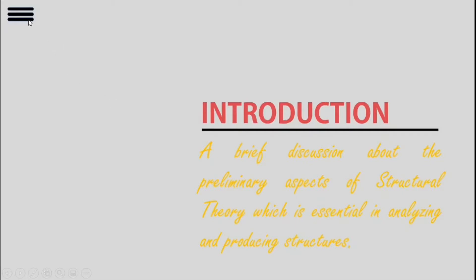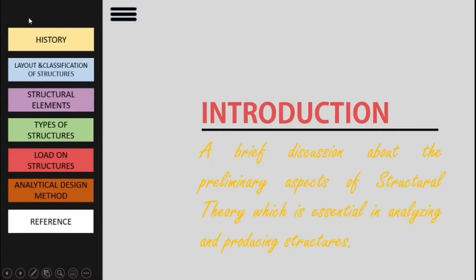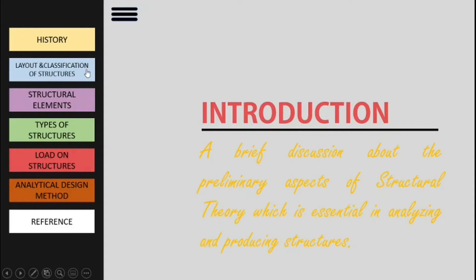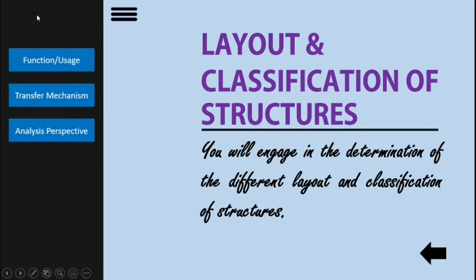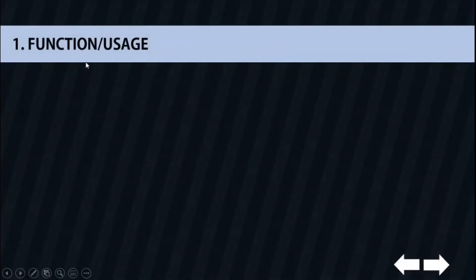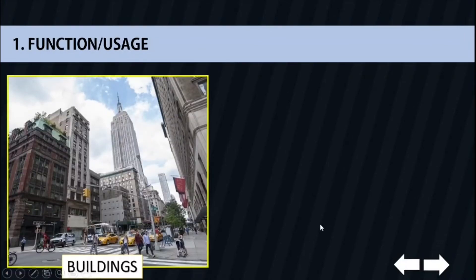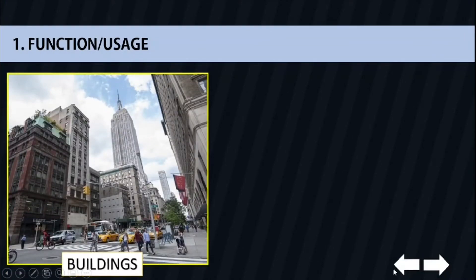Moving to our next topic, you will engage in the determination of the different layout and classification of structures, starting with the classification under the function or usage of the structure, starting with buildings. Buildings are usually roofed and walled structures built for permanent use or for dwelling.